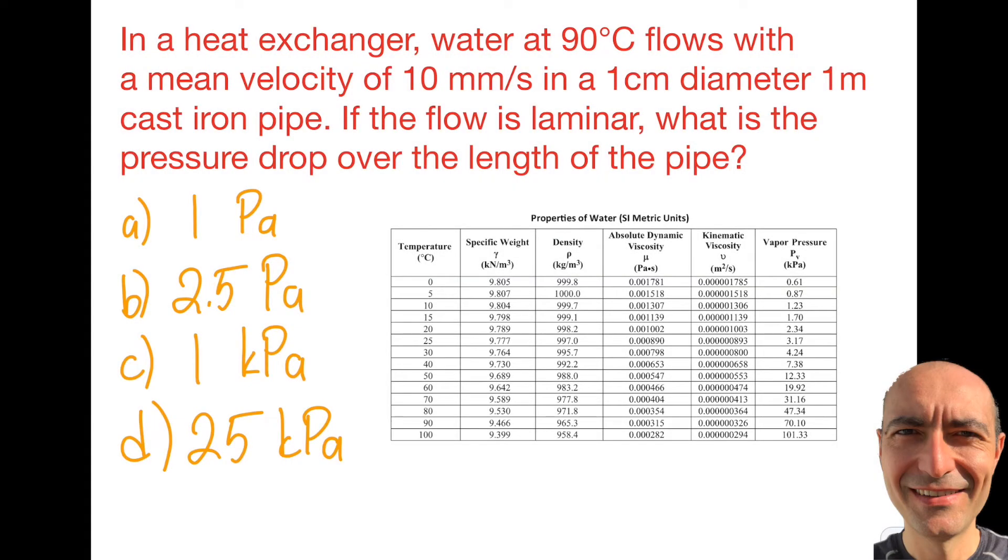All right, welcome everybody to this particular question. Let's read the question. In a heat exchanger, I have water at 90 degrees Celsius that flows with a mean velocity of 10 millimeters per second in a one centimeter diameter, one meter length of a cast iron pipe. If the flow is laminar, what is the pressure drop over the length of the pipe?